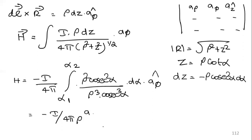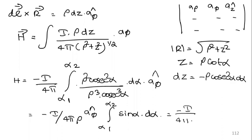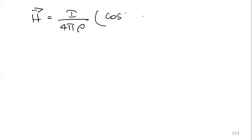Continuing the integration of sin α gives −cos α. Applying the limits, H = i/(4πρ) · (cos α2 − cos α1) · aφ. So for a finite conductor of length defined by angles alpha 1 and alpha 2, the magnetic field intensity is H = i/(4πρ) · (cos α2 − cos α1) · aφ.